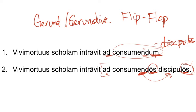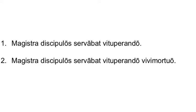We'll see some more examples. Next sentence: Magistro discipulos servabat vituperando. The teacher was protecting the students by chastising — because that's what teachers do; we chastise people who misbehave. In this sentence, it doesn't say exactly who is getting chastised. There is no direct object of vituperando. Next sentence: Magistro discipulos servabat vituperando vivo mortuo. Now we're giving what would be a direct object of vituperando. The teacher was protecting the students by chastising the zombie.